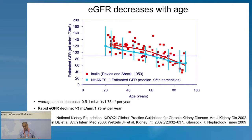Regarding the kidney and many other functions in the body, there may be decreases with age — this is expected. The overall annual decrease in glomerular filtration rate for all patients is about 0.5 to 1 milliliter per minute per year, but a rapid GFR decline should be considered if higher than 3 milliliters per minute per year. Keep this figure in mind.